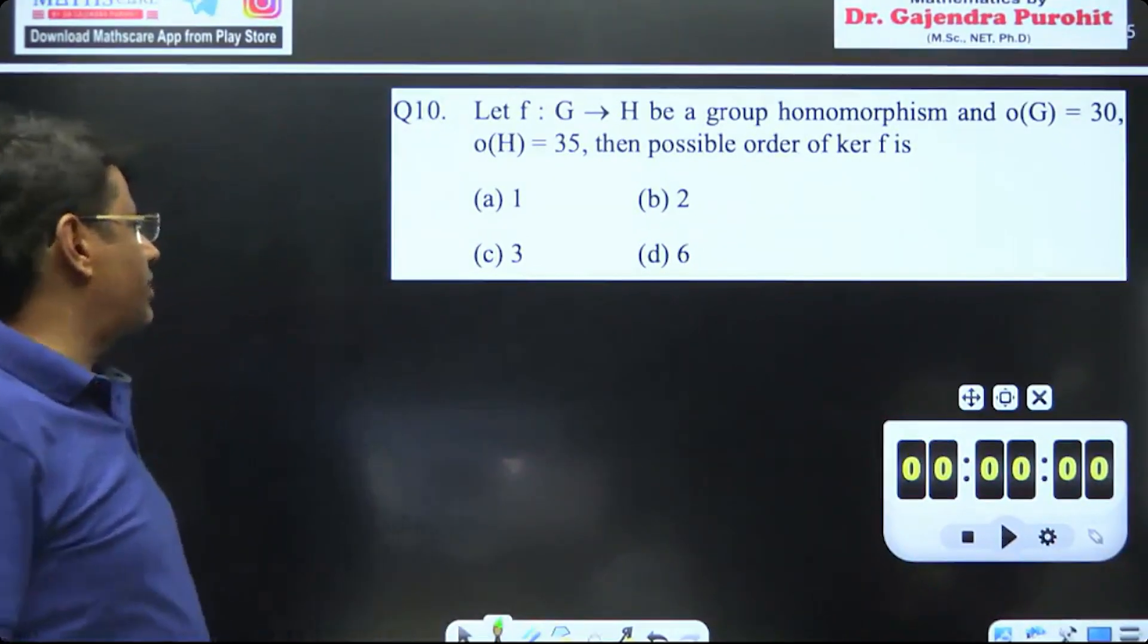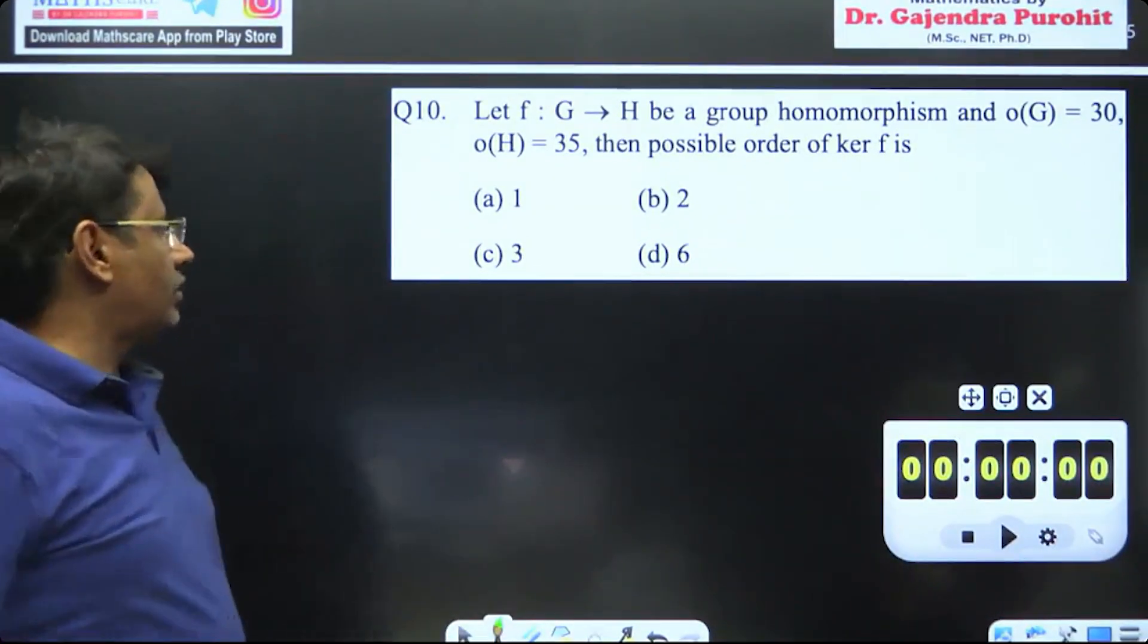So we are given that f: G to H is a group homomorphism, the order of G is equal to 30, and the order of H is equal to 35.